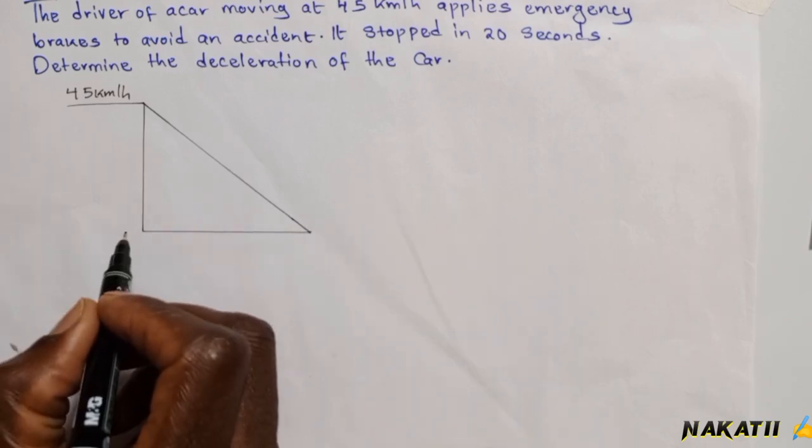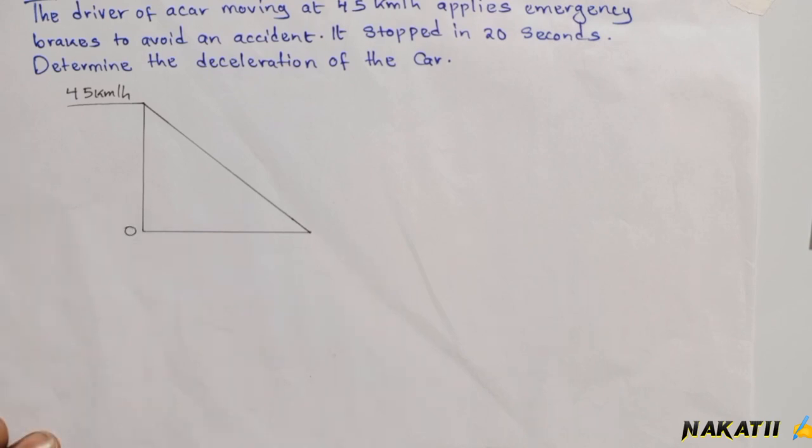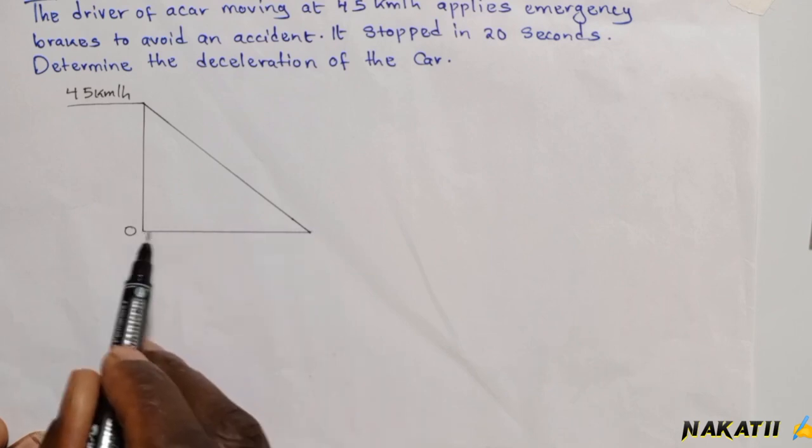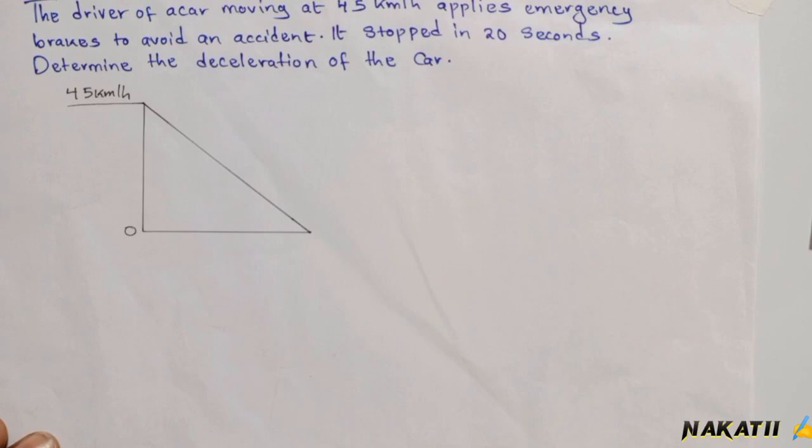...here the velocity will be zero. For it to stop, the velocity must be zero. This is the time taken for this car to stop from this point to this point here. You've been told the time taken is 20 seconds.